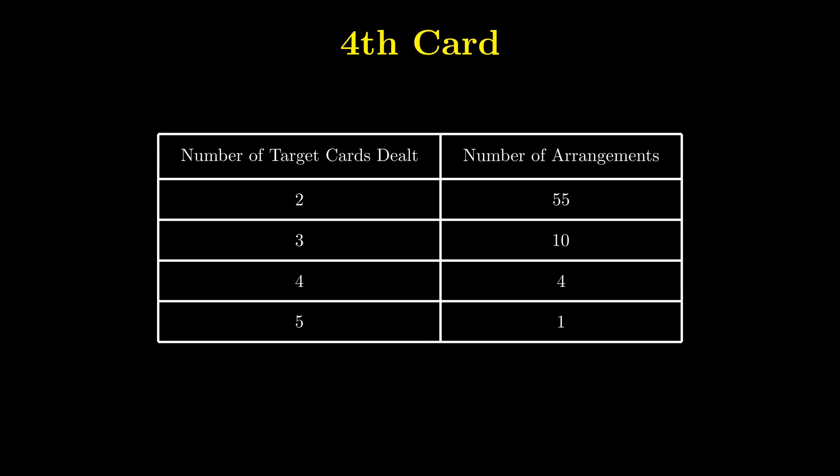Notice that after we get 4 aces, the fifth card must be a king, so we must stop dealing after the fifth card.